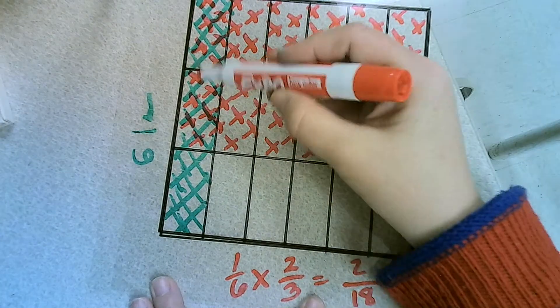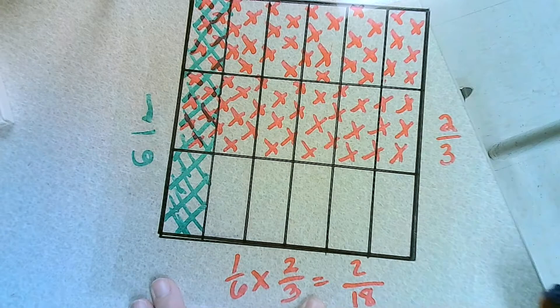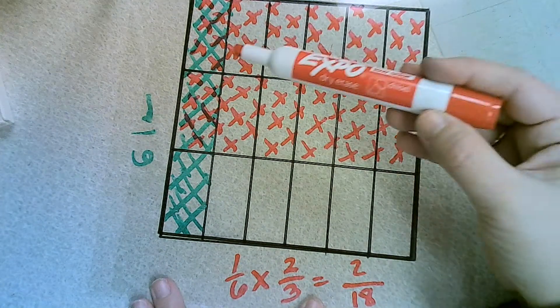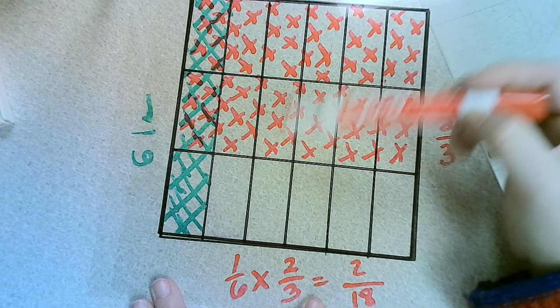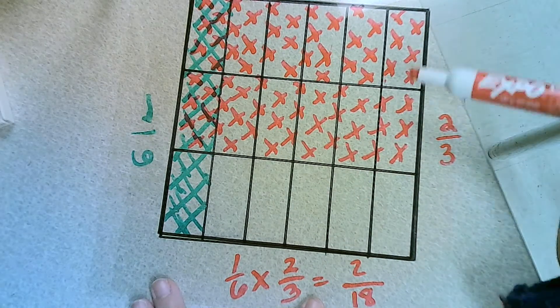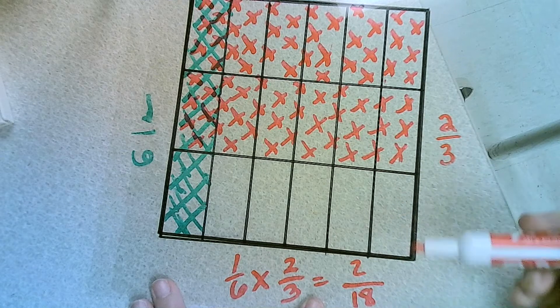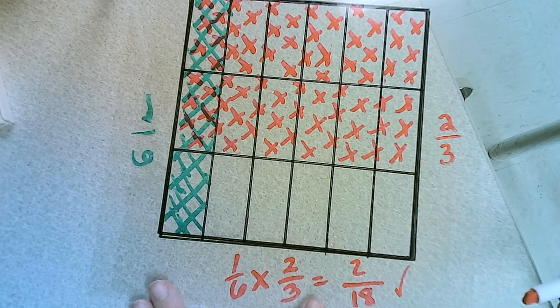So let's see. We do have 2 that have both green and red in it. And there are 1, 2, 3, 4, 5, 6, 7, 8, 9, 10, 11, 12, 13, 14, 15, 16, 17, 18. So our model and our math check out.